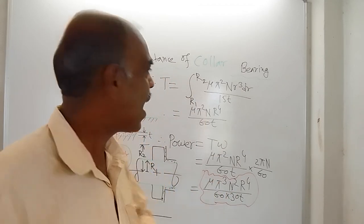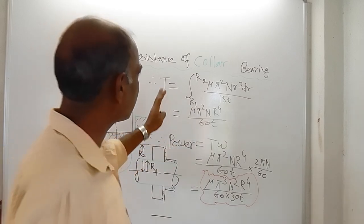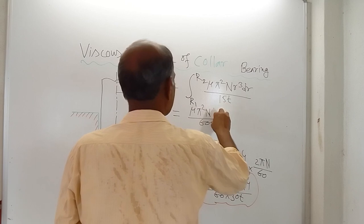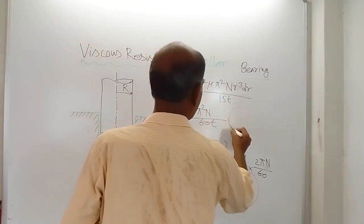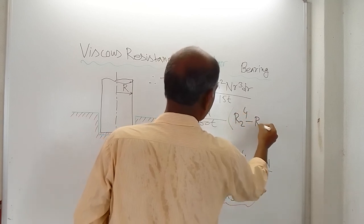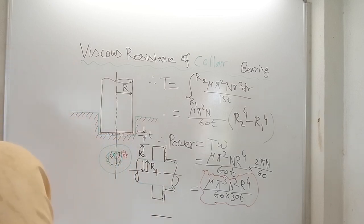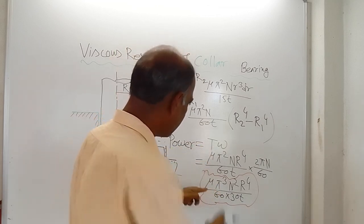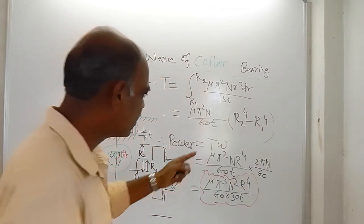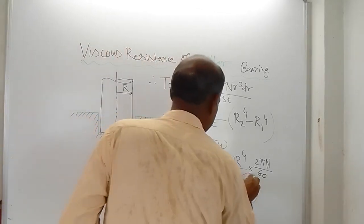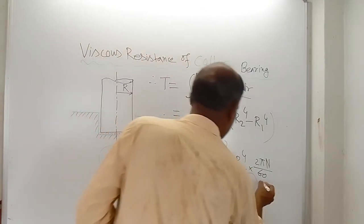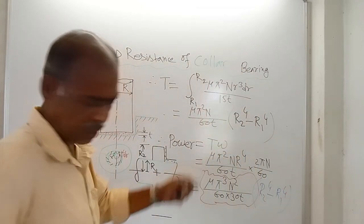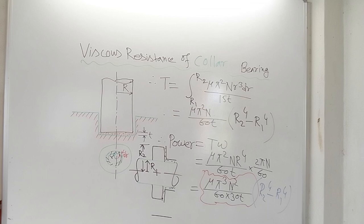You calculate torque for the elementary ring, then integrate from r1 to r2. The result will not be r⁴ alone — it will be (r2⁴ - r1⁴). So instead of r2 to the power 4, this difference appears: r2 to the power 4 minus r1 to the power 4. Similarly, the power calculation result is the same but with this difference as the multiplying factor — (r2⁴ - r1⁴).